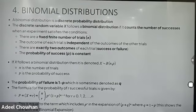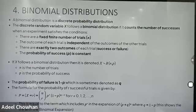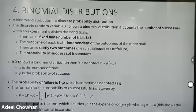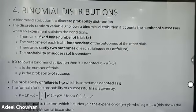The fourth topic is binomial distribution. A random variable is a discrete random variable. Remember, there will be only two possibilities — one is success and one is failure. The parameters are: X ~ Binomial(n, p), where n is the total number of trials and p is the probability of success. q = 1 − p is the probability of failure. The formula is: P(X = r) = nCr × p^r × q^(n−r), which can also be written as nCr × p^r × (1−p)^(n−r), where r = 0, 1, 2, ..., n.